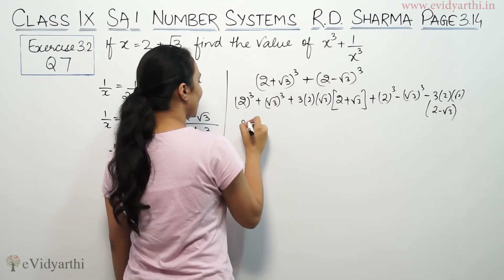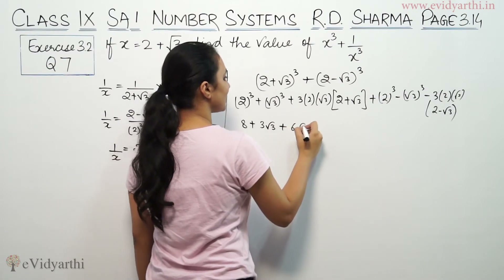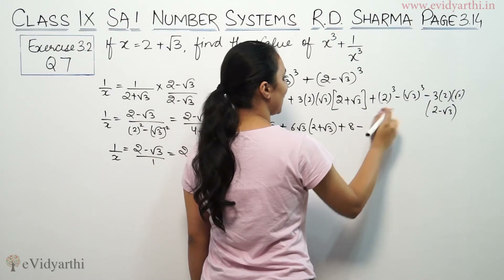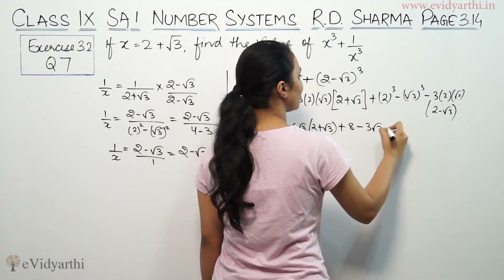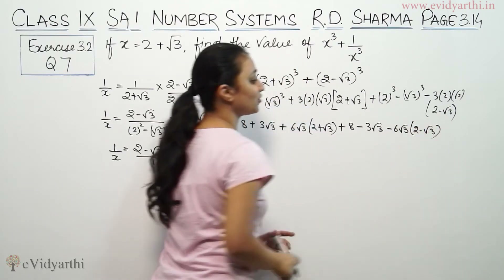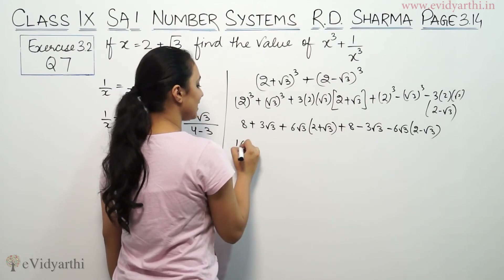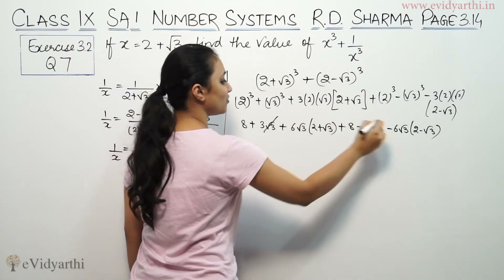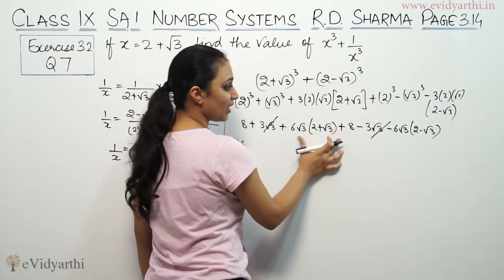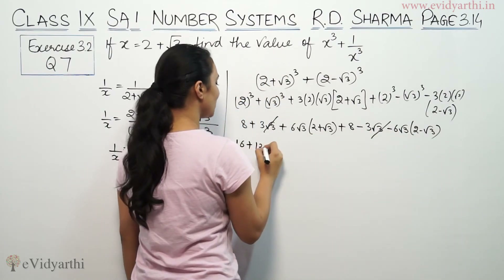Expanding the cube of (2 plus root 3): 2 cube is 8, root 3 cube is 3 root 3, and the cross term gives 6 root 3. Similarly for (2 minus root 3) cube: 2 cube is 8, root 3 cube is 3 root 3, and the cross term gives 6 root 3. Adding the cube terms: 8 plus 8 equals 16. The 3 root 3 minus 3 root 3 terms cancel, and 6 root 3 plus 6 root 3 gives 12 root 3.